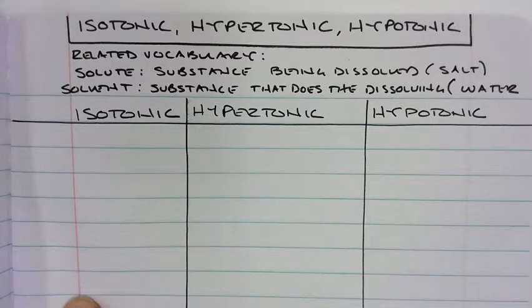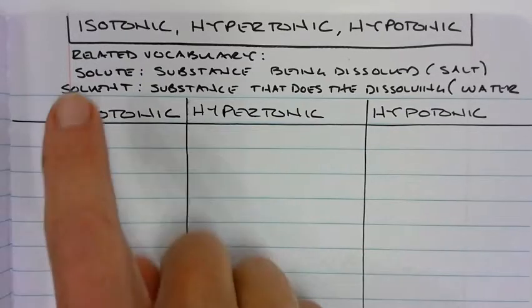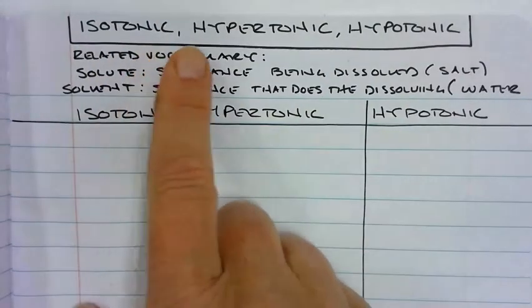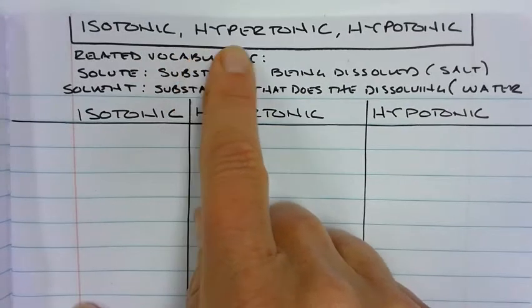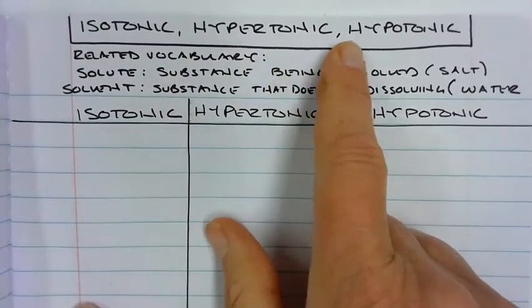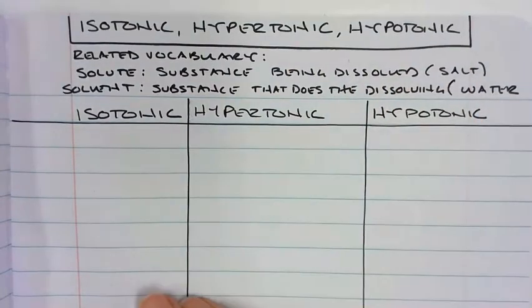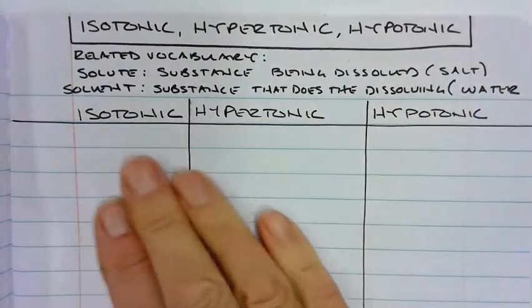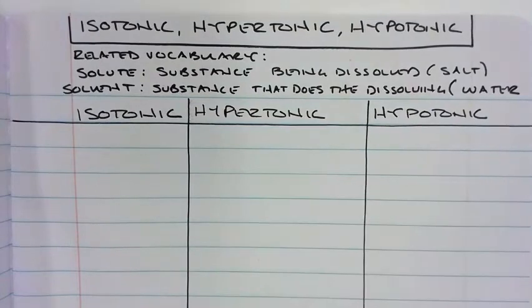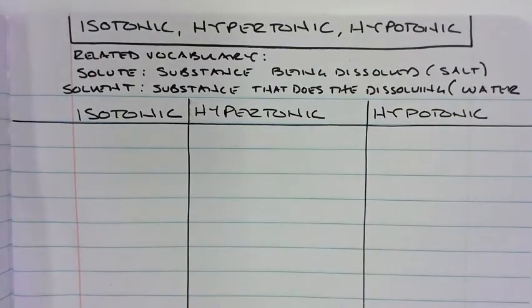This week we're going to look at cell transport and three different terms. One term is called isotonic, another term is called hypertonic, and the last term is called hypotonic. I would take a moment and create a three column graphic organizer in your notes.